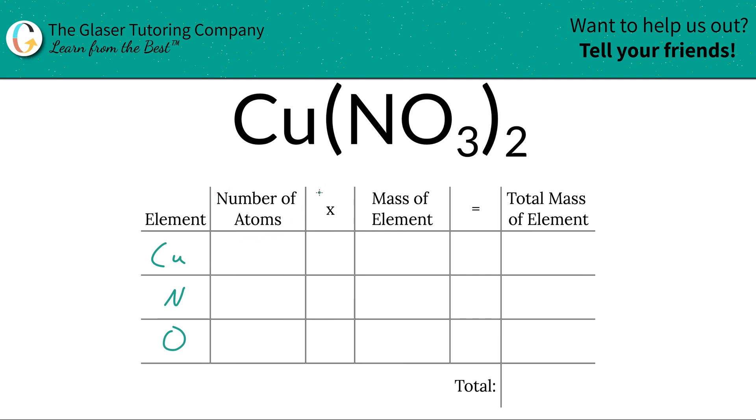Then next is to write down the number of atoms, that's where the subscripts come into play. So at the bottom of copper there's an invisible one, that means we have one copper atom. Now at the bottom of nitrogen there is a one, but the problem is that nitrogen is tied up in the polyatomic anion nitrate. And you don't have one nitrate here, you have two of them. So if in each nitrate there's only one nitrogen but you have two nitrates, there should be two nitrogens.